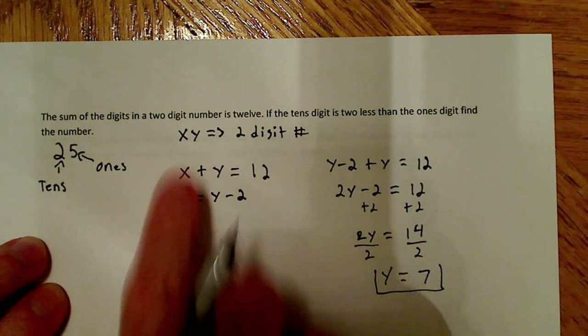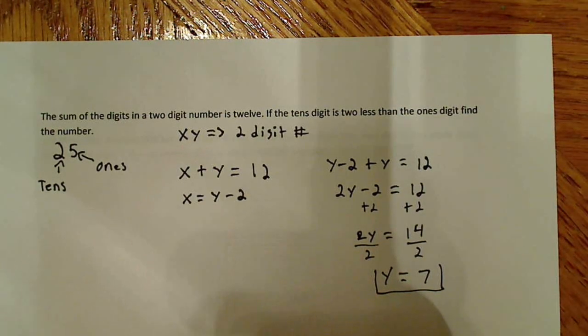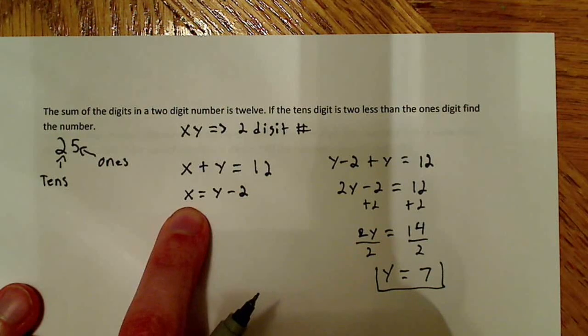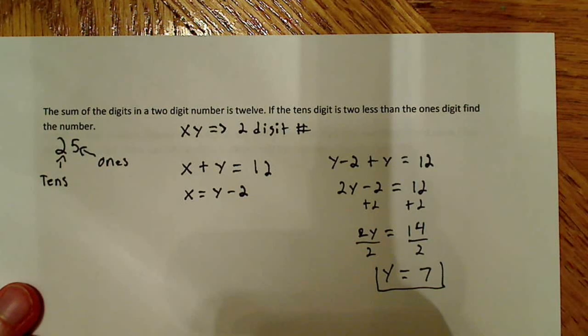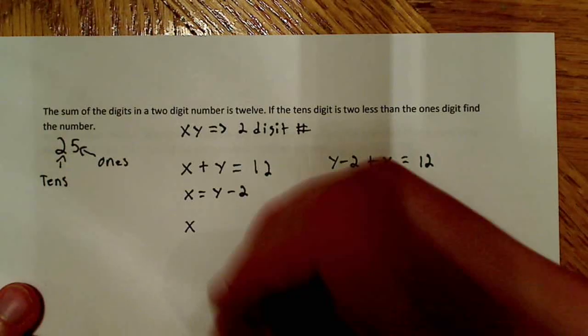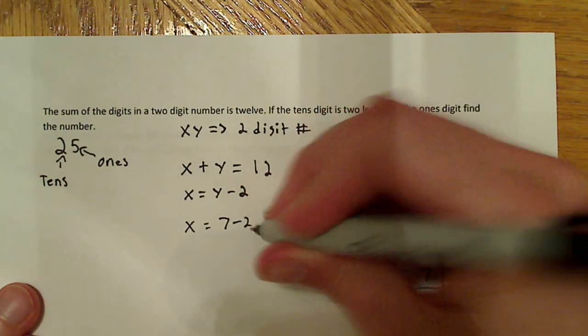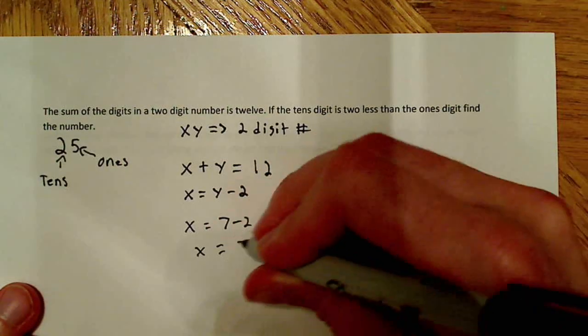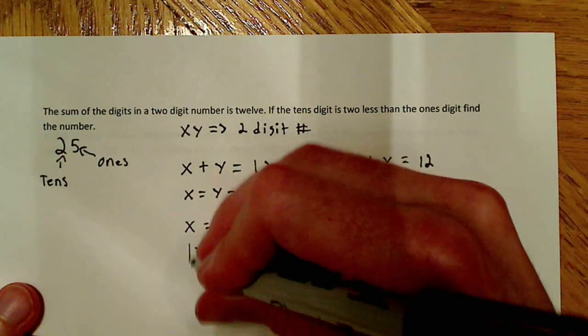So we have our first digit. We have the ones digit. We just solved for the ones digit. Now, we have this really convenient equation right here, x equals y minus 2. And to get x, I'm just going to plug in y and subtract here. So 7 minus 2, x is equal to 5.